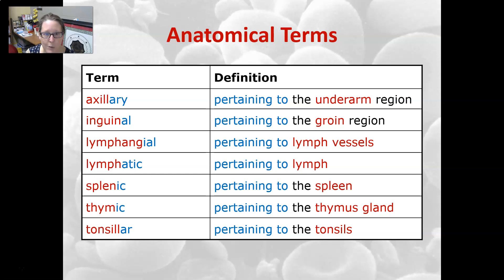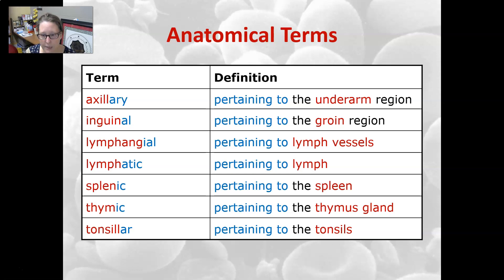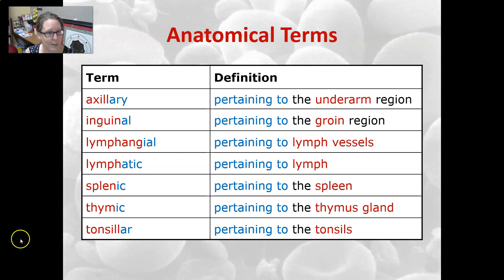Now for a few anatomical terms: axillary is pertaining to the underarm or axilla, inguinal is pertaining to the groin region, lymphangiole is pertaining to lymph vessels, lymphatic is pertaining to lymph, splenic is pertaining to the spleen, thymic is pertaining to the thymus gland, and tonsillar is pertaining to the tonsils. Those are all the word parts for your lymphatic and immune system.